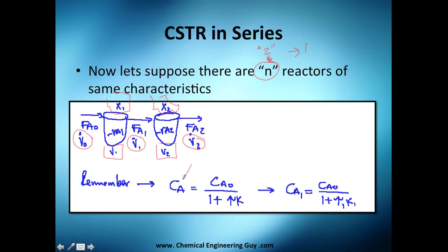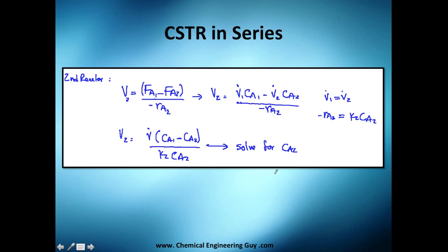The conversion definition stays the same — if you don't know where it came from, go back to previous videos. For CA1, we substitute data for reactor one. For the second reactor, the design equation is: volume equals the difference in molar flow rates divided by the rate of reaction two. That's very important.